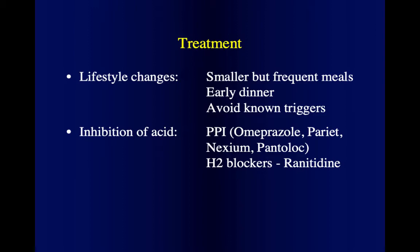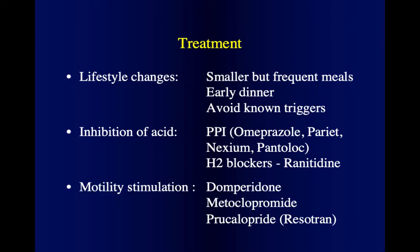We can treat reflux by blocking acid production in the stomach. The strongest class is proton pump inhibitors — omeprazole, Pariet, Nexium, or Pantoloc — and a somewhat weaker class available over the counter is H2 blockers. This strategy decreases acid in the stomach but doesn't address other digestive enzymes or bile from the small intestine. In that case, we stimulate motility using drugs such as domperidone, metoclopramide, and probably the strongest currently available — prucalopride (Resotran).